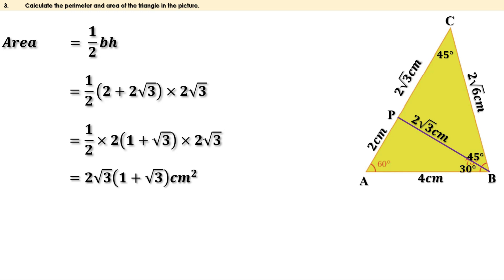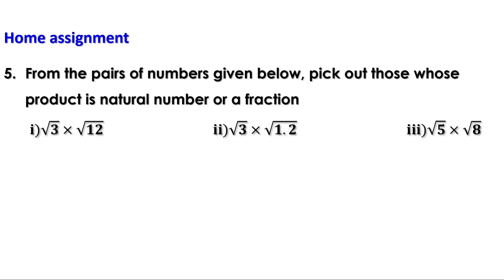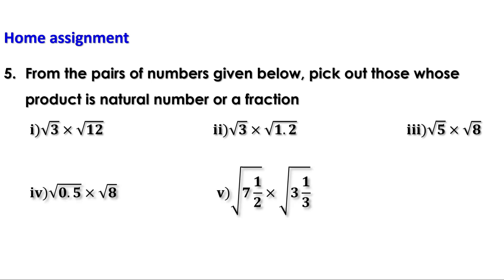Today we have done some problems on page 57 and 58. Now there is a homework. From the pairs of numbers given below, pick out those whose product is a natural number or a fraction: root 3 into root 12, root 3 into root 1.2, root 5 into root 8, root 0.5 into root 8, root 7.5 into root 3, root (1/3). We will discuss the remaining part in the next video. Till then, bye.